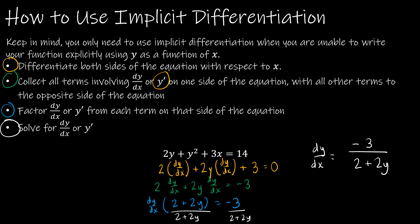To summarize all the steps: differentiate both sides. If you're differentiating a y or anything other than x, you have to include the chain rule. Then collect all those terms, factor them out, and solve for y prime.